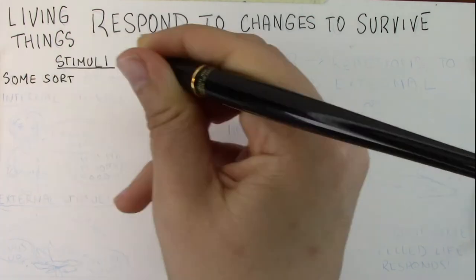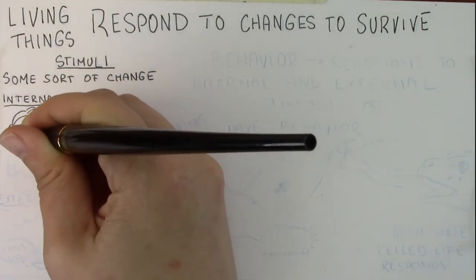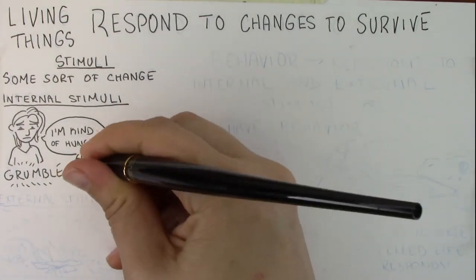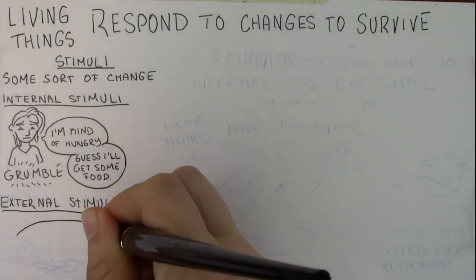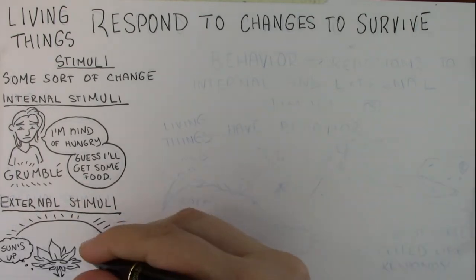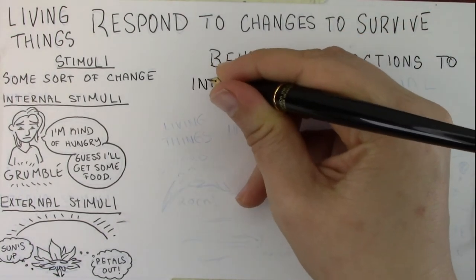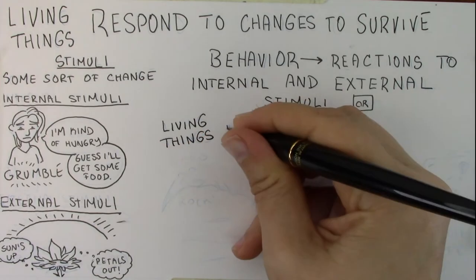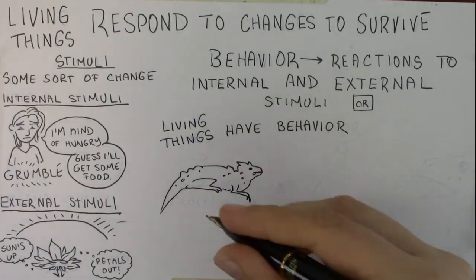Living things respond to changes to survive. These changes can be both internal or external stimuli, which basically means some sort of change. A good example of an internal stimuli is something that's coming from inside the organism. Like when your stomach grumbles, that is a stimuli to indicate that you might need to eat some food. External stimuli are things that happen outside of the organism. For instance, when the sun rises, many flowers, which are daytime pollinated, might open their petals as a response to that external change or external stimuli. Collectively, we call these responses to different stimuli behavior. So whether it's internal or external stimuli, when an organism responds, it is expressing some sort of behavior. So you can also think of this rule as living things have behavior.